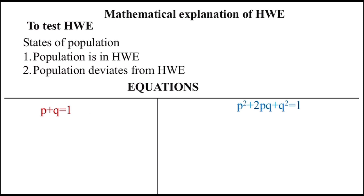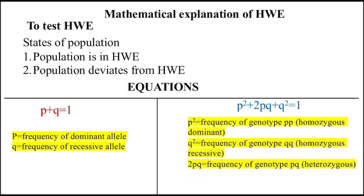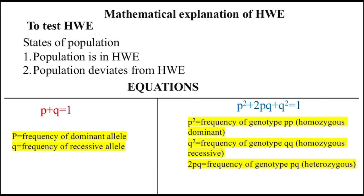To test HWE, there are two states of population: either the population is in HWE or the population deviates from HWE. The mathematical explanation of HWE includes two equations. The first equation is P + Q = 1, where P is the frequency of the dominant allele and Q is the frequency of the recessive allele. The second equation is P² + 2PQ + Q² = 1, where P² is the frequency of the homozygous dominant genotype, Q² is the frequency of the homozygous recessive genotype, and 2PQ is the frequency of the heterozygous genotype.